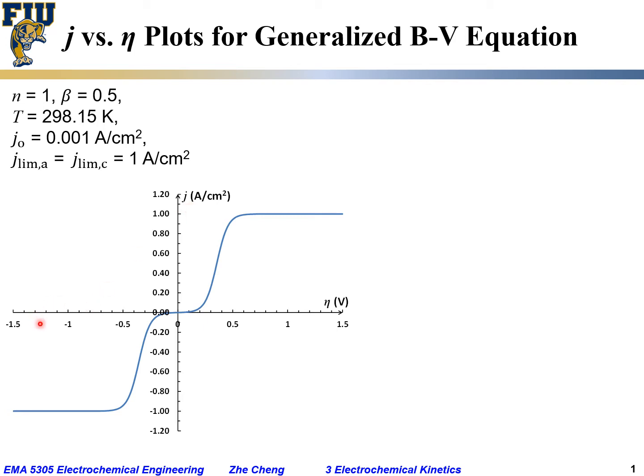And the negative eta means cathodic bias, or the half-cell reaction is going through reduction reaction, and the current would be negative. Well, positive eta means positive overpotential, anodic overpotential. It means the electrode reaction is going through oxidative or anodic process, and the current would be positive. And then we have this curve, and let's look at this curve a little bit carefully.